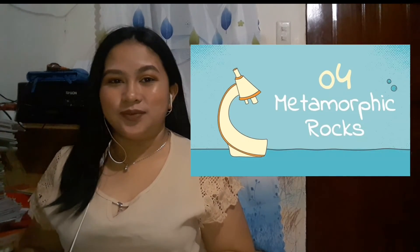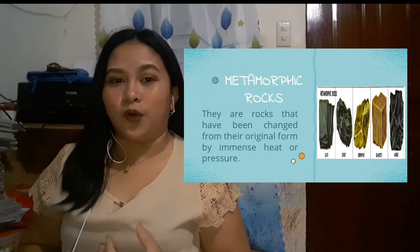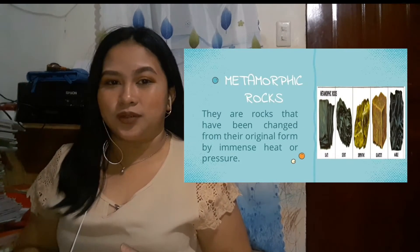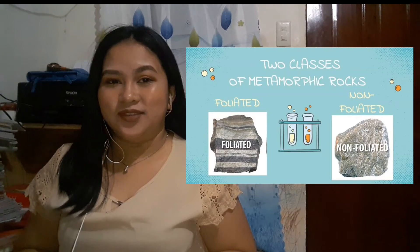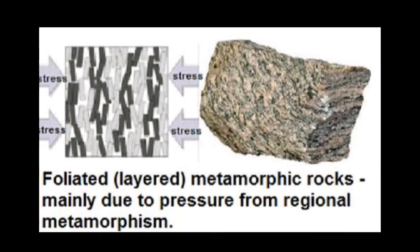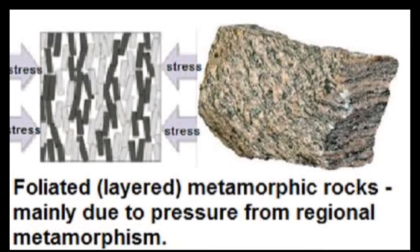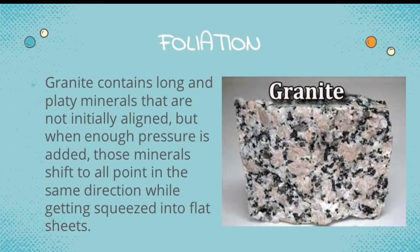Lastly, the third type of rock is metamorphic rock. Metamorphic rocks are rocks that have been changed from their original form by immense heat and pressure. Metamorphic rocks have two classes: foliated and non-foliated. When a rock with flat or elongated minerals is put under immense pressure, the minerals line up in layers, creating foliation. Foliation is the aligning of elongated or platy minerals like hornblende or mica perpendicular to the direction of pressure applied. An example of this transformation can be seen with granite, an igneous rock.